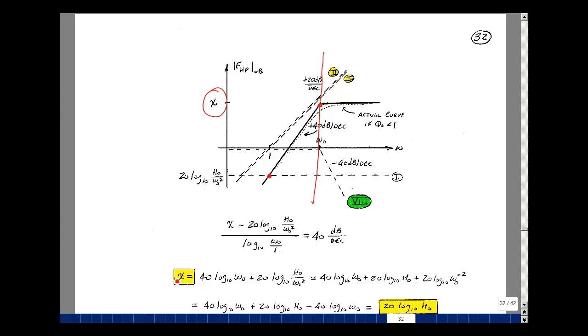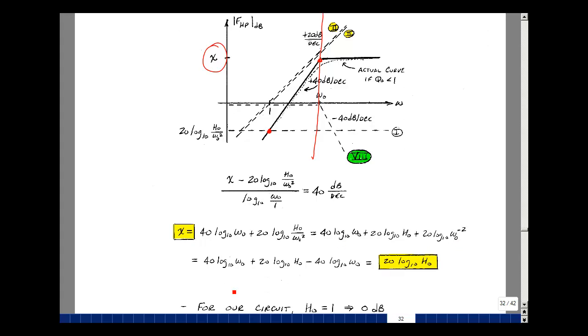So x is going to be equal to this term on the other side of the equation, and I'm going to multiply this by this. So I'll get 40 times log base 10 of omega, plus this term. And I'm going to write this term here as a sum of terms. So I've got 20 log base 10 of H naught. I've got 1 over omega naught squared. I could write that then as a log base 10 of omega naught to the minus 2 power. So clean this up then. I have 40 times the log base 10 of omega naught, plus 20 log base 10 of H naught, and then minus 40 log base 10 of omega naught. So this cancels with this, and I'm left with 20 log base 10 of H naught.